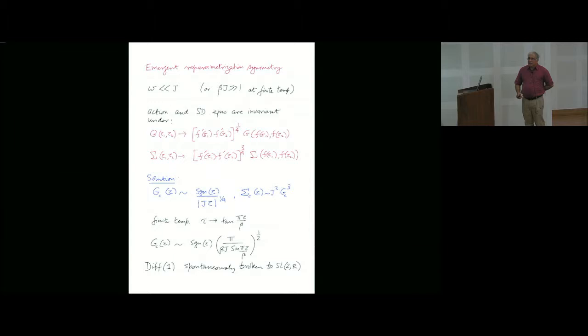The key point for this solution is that this symmetry of time going to an arbitrary function of time, which I have called DIF1, one referring to R1 or S1, is spontaneously broken to SL2R. You can verify that these two solutions are invariant under SL2R. You have spontaneous symmetry breaking of this large emergent symmetry by the solution of the problem.